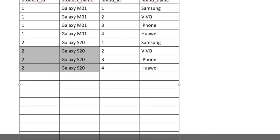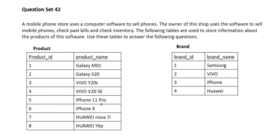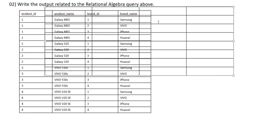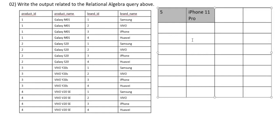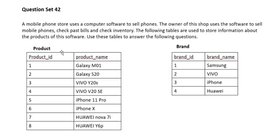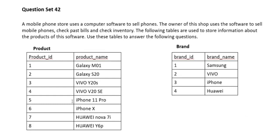In this table, we have the product table and brand columns: product ID, brand ID, brand name. The tables below show the current output, and we are looking at the product ID and product name.